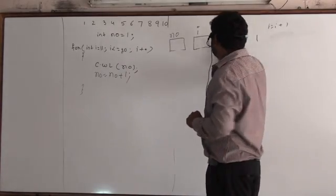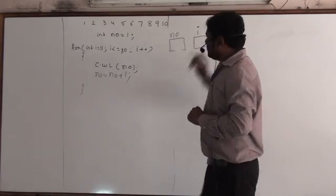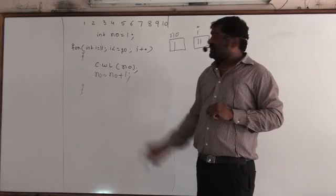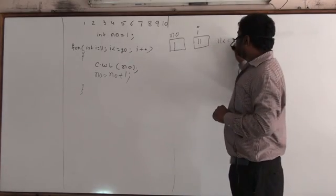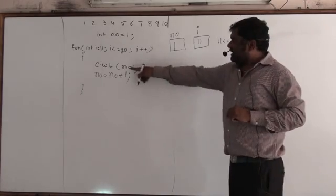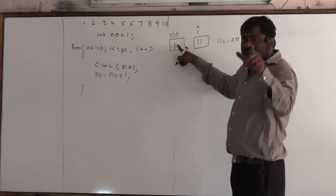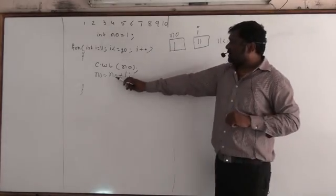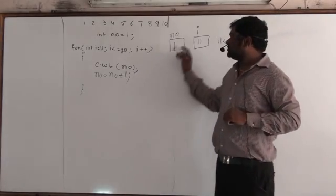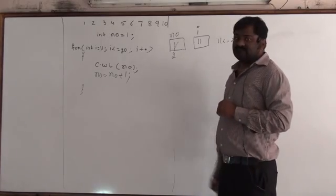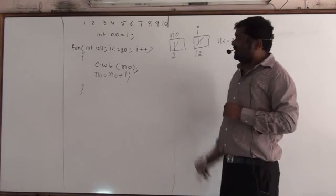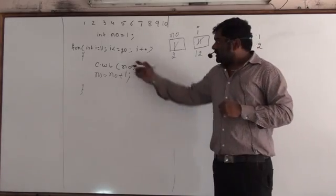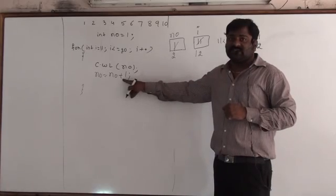Now check it out again: the initial number is storing 1, and int i equals 11. The initial value is 11. 11 less than or equals to 20 — true. If true, print number: the number is 1. Now number equals number plus 1, so 1 plus 1 is 2, and 2 will be stored in number. i++, so i is 12. Print 2, then number equals number plus 1: 2 plus 1 is 3. So number is 3.